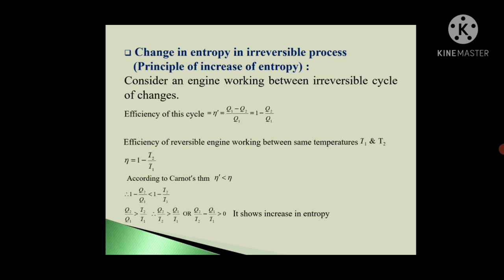Consider an engine working between an irreversible cycle of changes. The efficiency of this cycle is given by Eta-dash = (Q1 - Q2) / Q1 = 1 - Q2/Q1. The efficiency of a reversible engine working between the same temperatures T1 and T2 is given by Eta = 1 - T2/T1. According to Carnot's theorem, Eta-dash, the efficiency of the engine working in an irreversible cycle, is less than the reversible engine efficiency. So Eta-dash < Eta, and we write: 1 - Q2/Q1 < 1 - T2/T1.